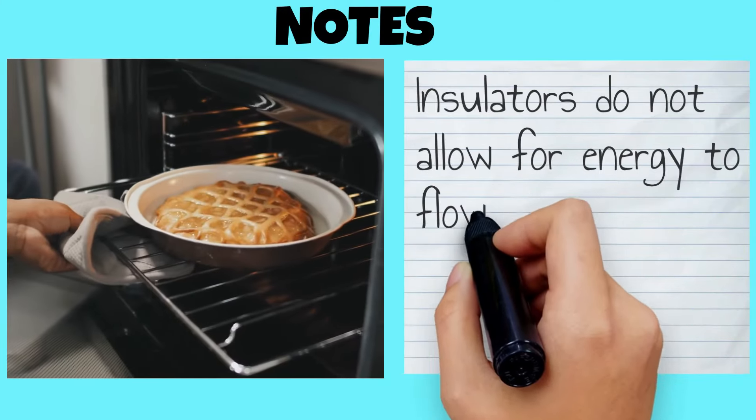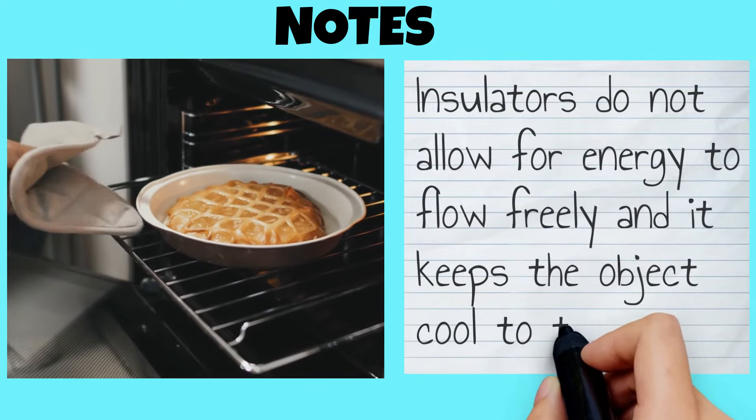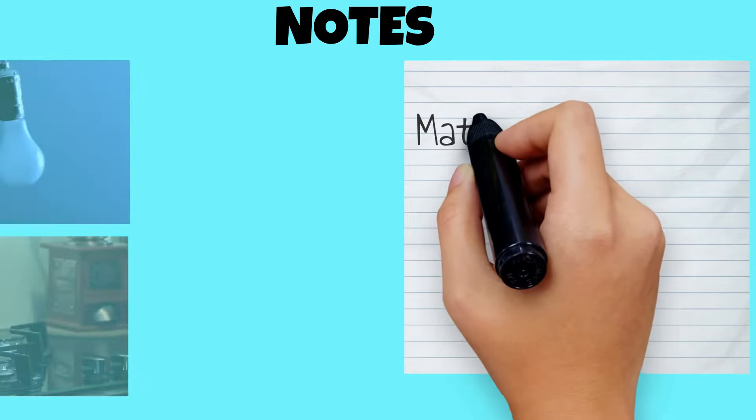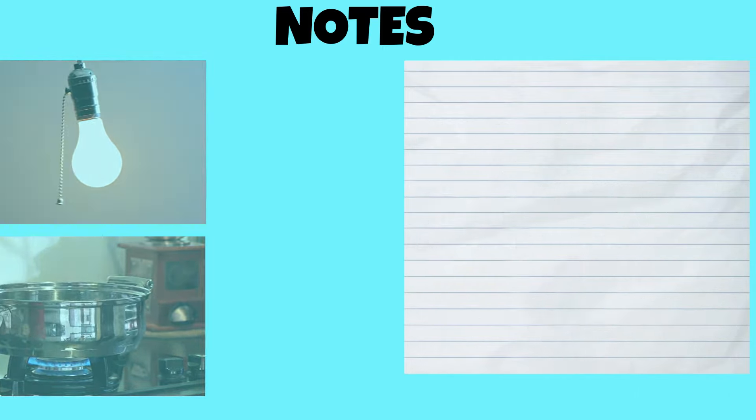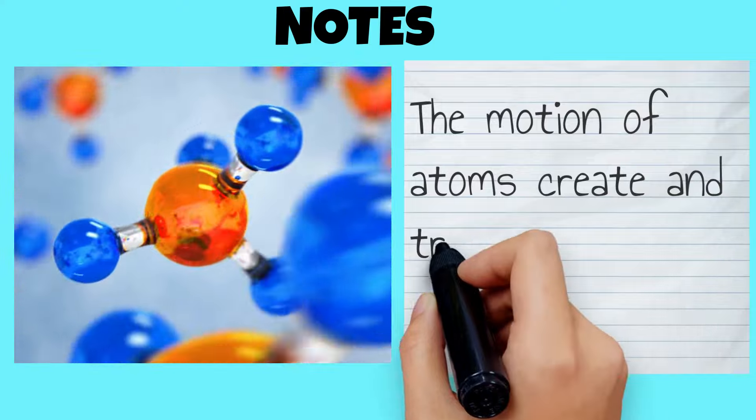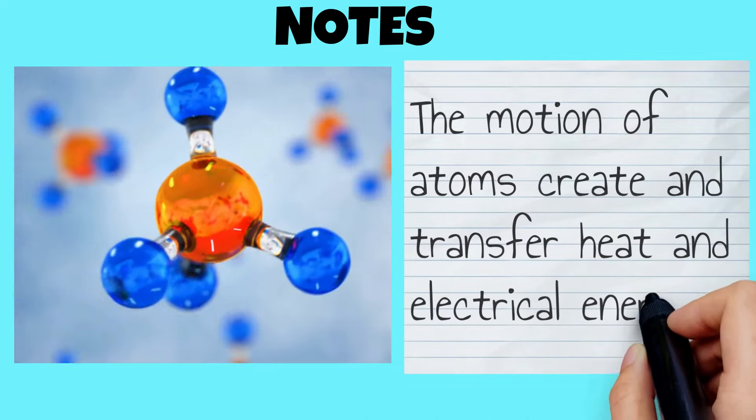Insulators do not allow for energy to flow freely and it keeps the object cool to the touch. Matter can be classified by its ability to conduct heat or electricity. The motion of atoms create and transfer heat and electrical energy.